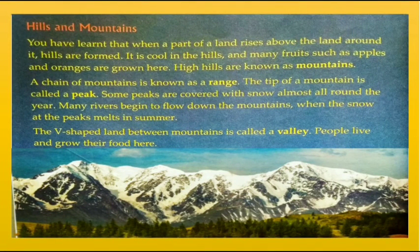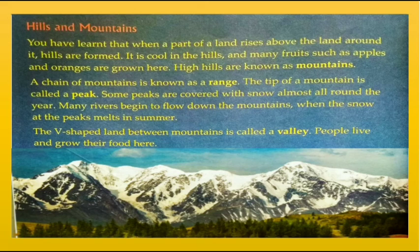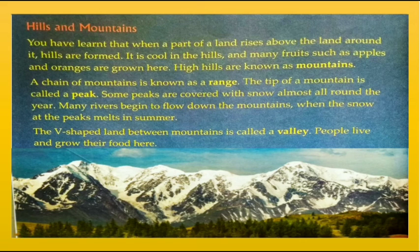Hills and mountains: when a part of land rises above the land around it, hills are formed. It is cool in the hills and many fruits such as apples and oranges are grown here. High hills are known as mountains. A chain of mountains is known as a range. The tip of a mountain is called a peak. Some peaks are covered with snow almost all year round.